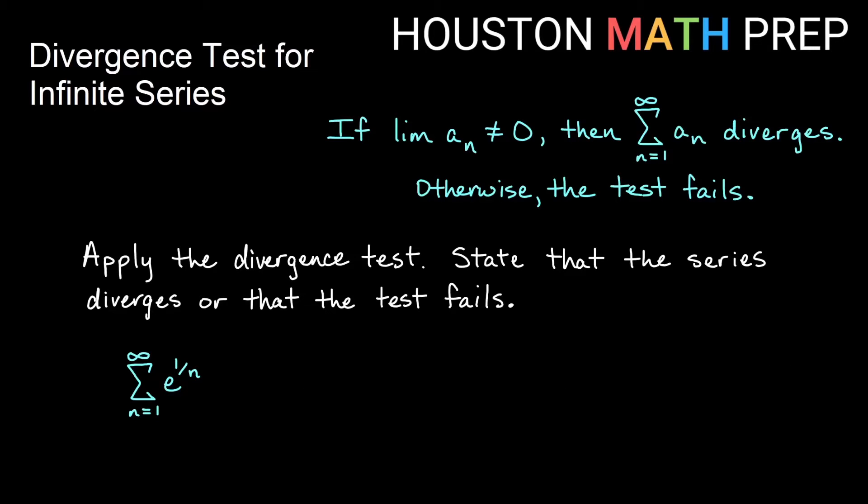Looking at another one, we have the infinite sum of e to the 1 over n. So you can see the 1 over n is now in the exponent. And what's happening is that our exponent is actually going to approach 0 like 1 over n does. And so we get the limit of e to the 1 over n is going to be e to the 0, which is 1. So since the limit is 1 and that number is not 0, then we know by the divergence test that the sum of e to the 1 over n diverges by this test.